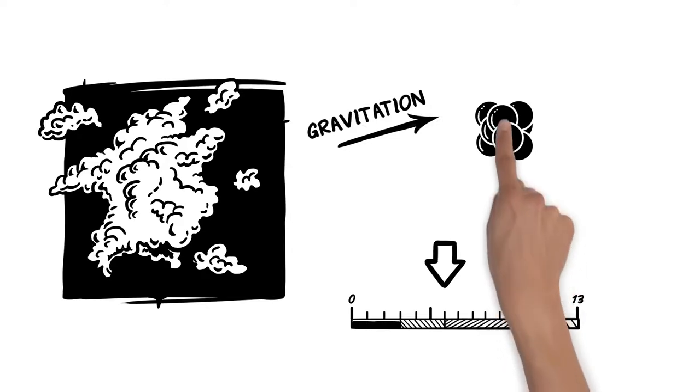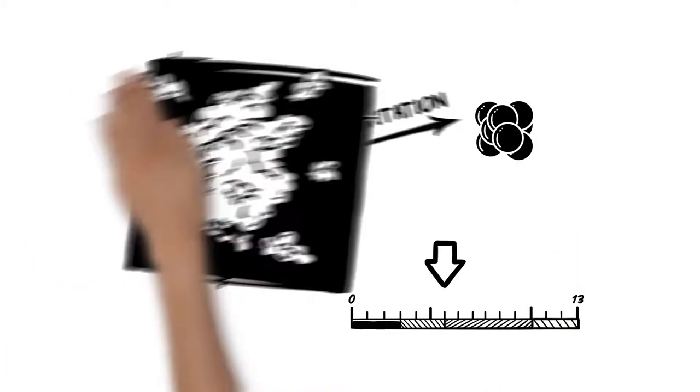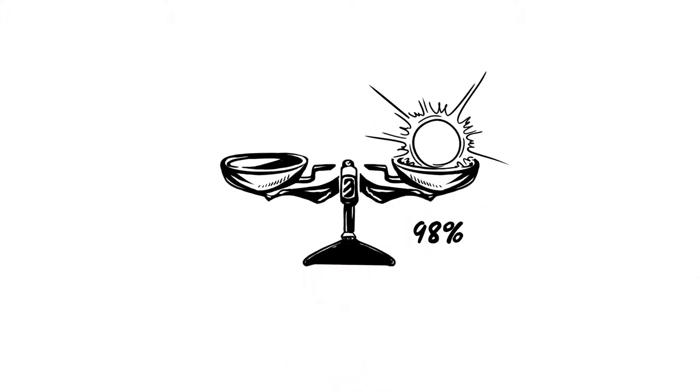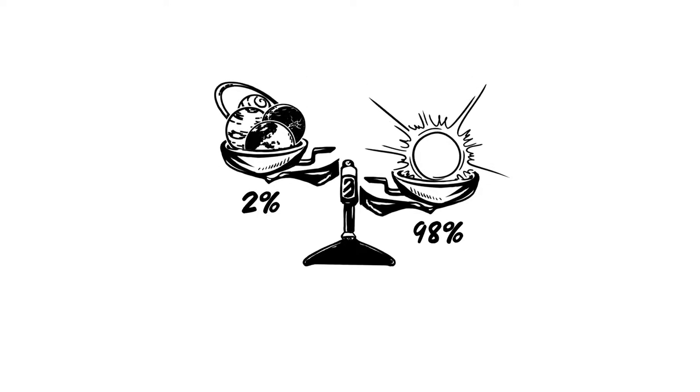Most of the matter accumulated in one place. A very big, hot ball, which makes up for an impressive 98% of all the matter in the solar system. The Sun.